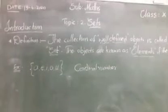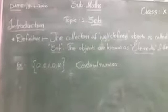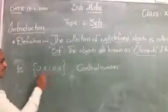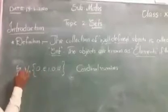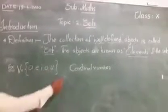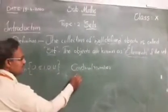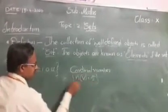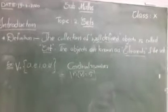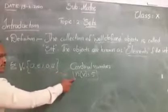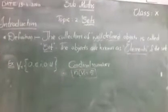The cardinal number of a set — usually we represent a set using a capital alphabet. Suppose I take this set as V. So V equals the set of {A, E, I, O, U}. The cardinal number of this set we represent as N(V) = 5. The number of elements in a set is known as its cardinal number.